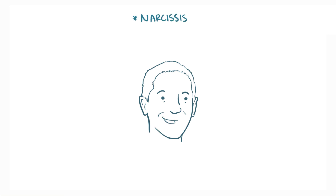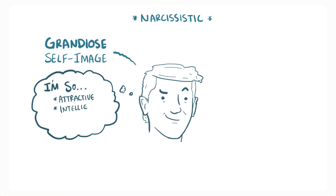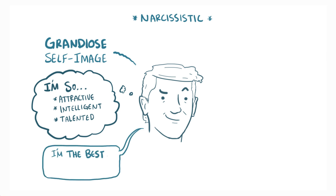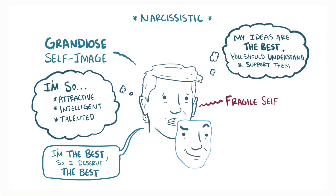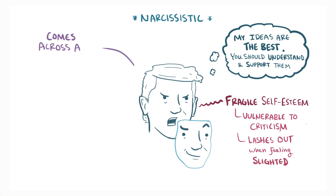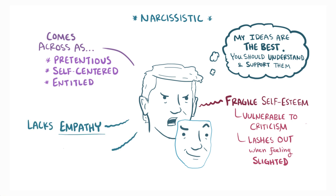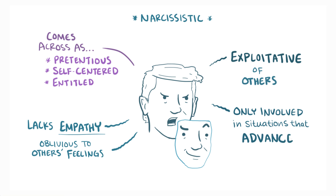The last one in this group is Narcissistic Personality Disorder, which is characterized by individuals who have a grandiose self-image where they think they're more attractive, more intelligent, and more talented than they are. Since they believe they're so special, they expect to be treated as such, obsessively demanding the best of everything. They also think their ideas are inherently the best and that other people should understand this and support them. But behind this mask of ultra-confidence lies a fragile self-esteem that's vulnerable to the slightest criticism, with them lashing out if they feel slighted. These people typically come across as pretentious, self-centered, and entitled. This is made worse by the fact that they lack empathy and are often oblivious to others' feelings. These people are often exploitative of those around them and will only get involved in situations that advance their personal agenda.